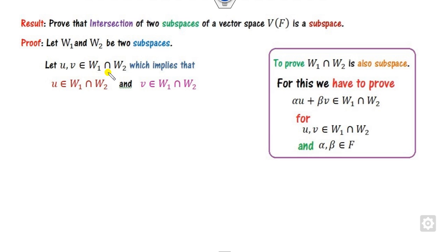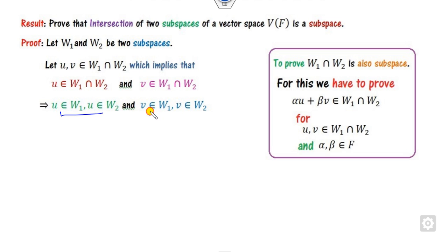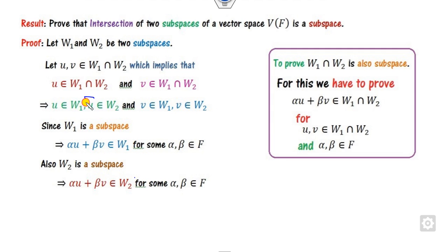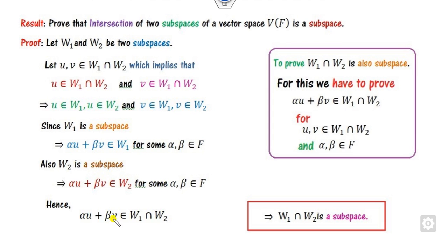Let U and V belong to the intersection W1∩W2. This means U belongs to W1 and U belongs to W2, and similarly V belongs to W1 and V belongs to W2. Now, since U and V both belong to W1, and W1 is a subspace, the closure property is satisfied, so the linear combination alpha·U plus beta·V also belongs to W1. Similarly, since U and V belong to W2 and W2 is a subspace, alpha·U plus beta·V also belongs to W2. From these two, the linear combination belongs to their intersection, which is the required result.